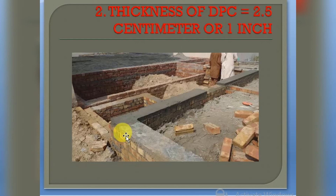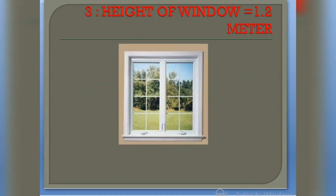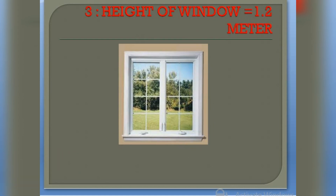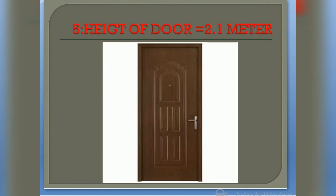Our next point is the height of window, which should be 1.2 meters. Here I have shown you the window — the height from this point to this point should be 1.2 meters. So the height of window is 1.2 meters.